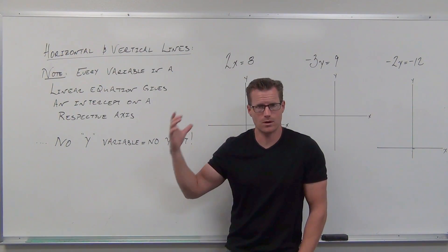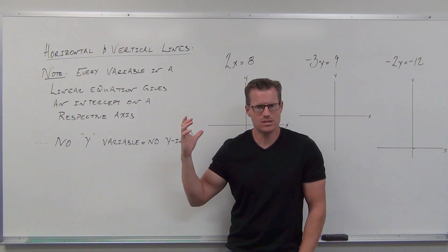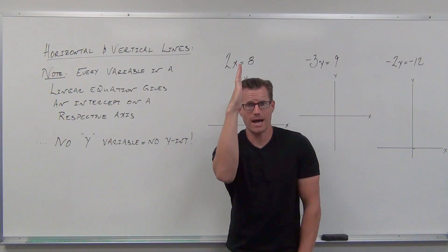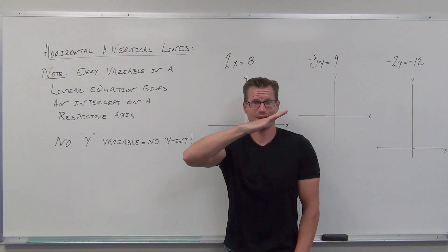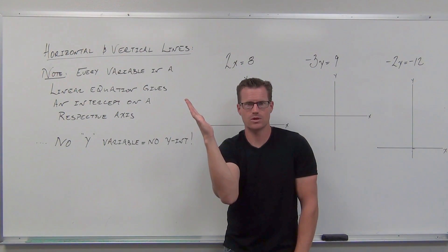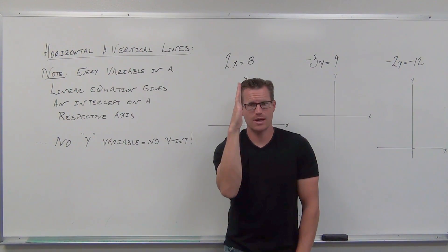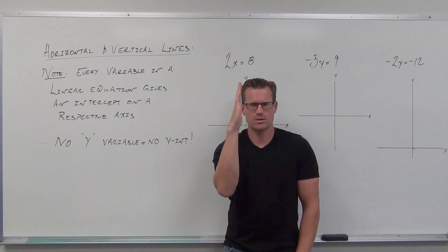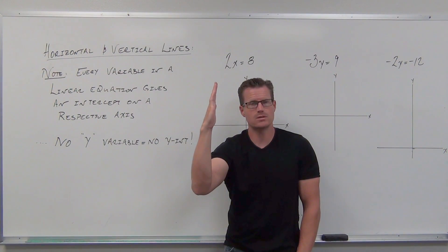If you lack a y variable, you're going to lack a y-intercept. Imagine a line that doesn't cross the y-axis. How would a line have to look to not cross the y-axis? In order to not cross the y-axis, you'd have to have a line that's parallel — that word meaning two lines that never intersect. So if you're not going to cross the y-axis, you're going to have to be parallel to the y-axis. That's a perfectly vertical line.